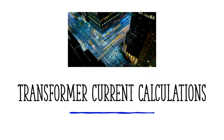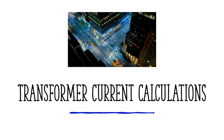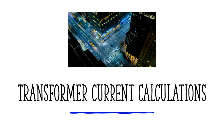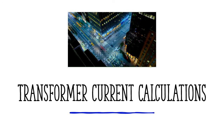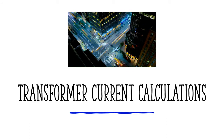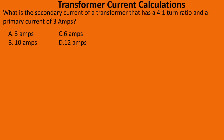Hey guys, it's the Electrical Code Coach. Today we're gonna take a look at transformer current calculations — we're just gonna learn the basics. Some of these questions will be reflected in the testing center. Let's go ahead and do a practice question: What is the secondary current of a transformer that has a four-to-one turn ratio and a primary current of three amps?